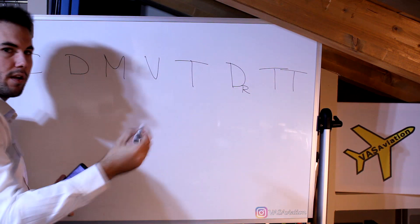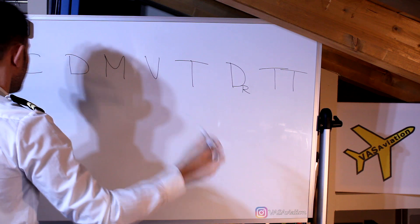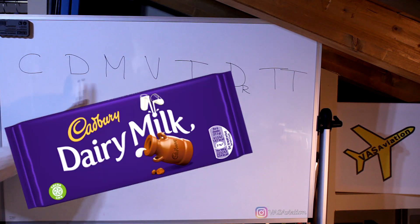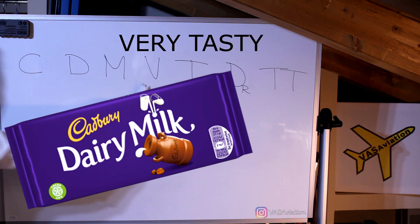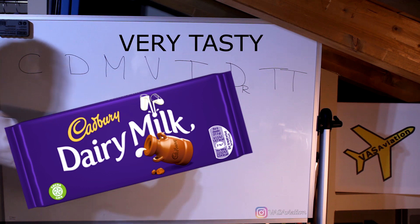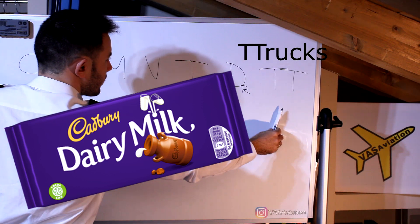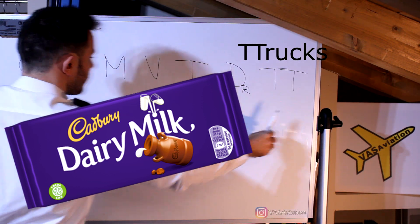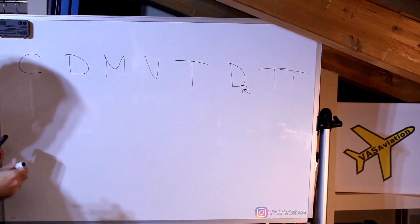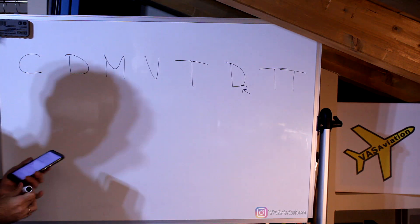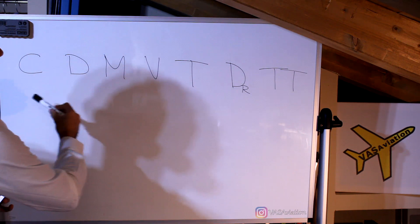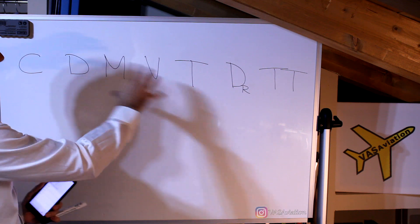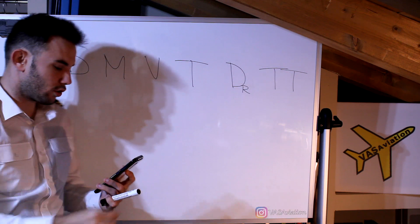So now the mnemonic goes as follows: Cadbury's Dairy Milk Very Tasty While Driving Tracks — True Track, Tracks While Driving Tracks. Now that we have our entire diagram, we can go fill in the blanks.